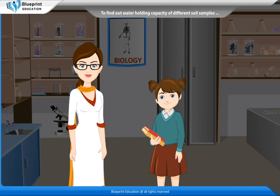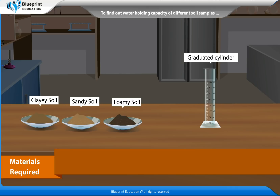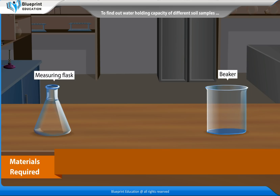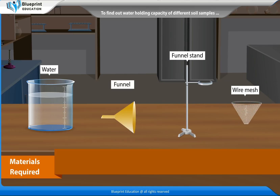Let's perform an experiment to find out the water holding capacity of different soil samples by percolation method. The materials required are: some samples of dry soil, a graduated cylinder, a measuring flask, a beaker, water, a funnel, a stand for the funnel, and wire mesh.